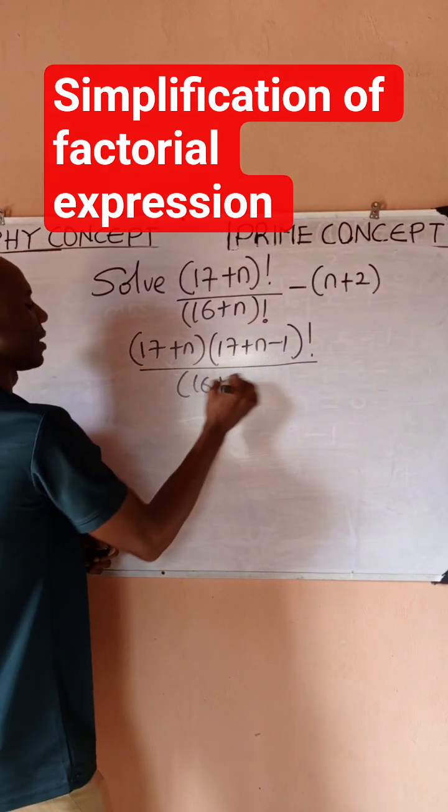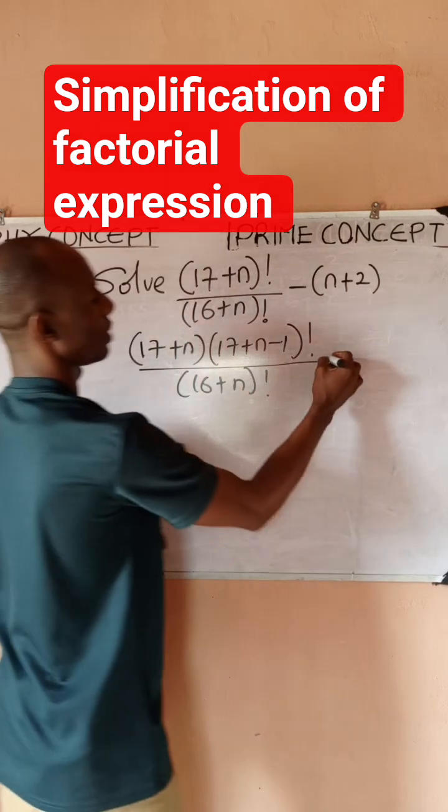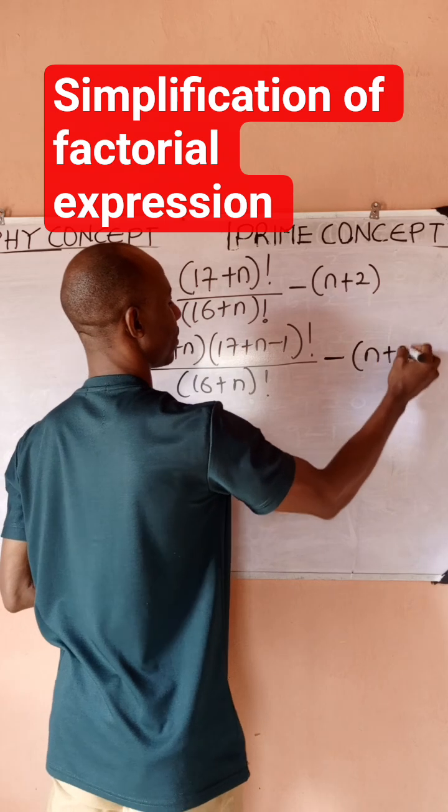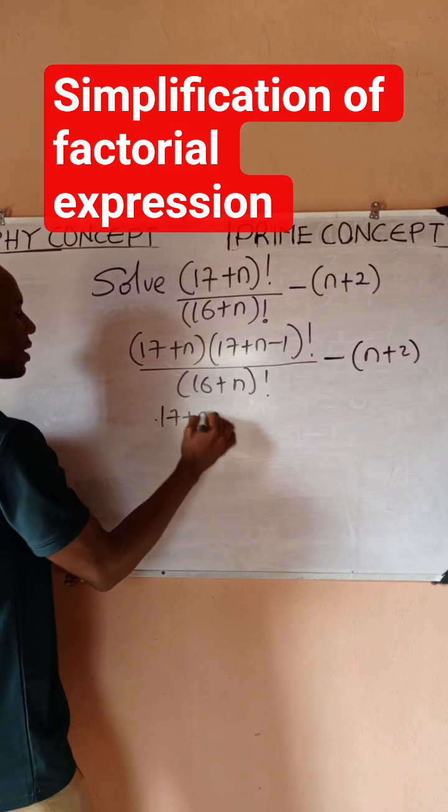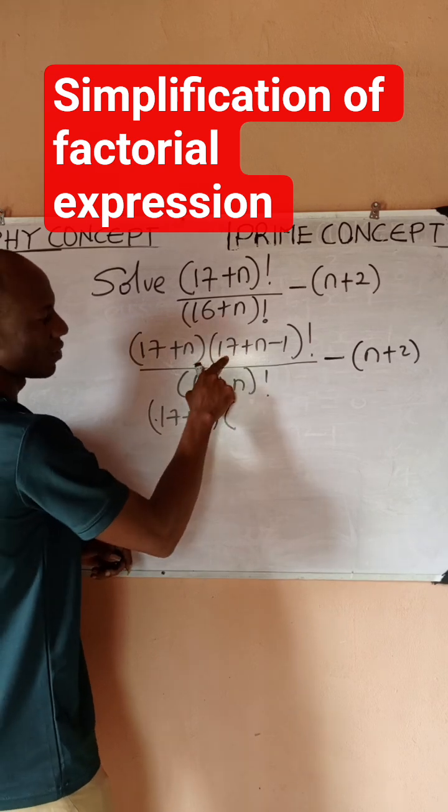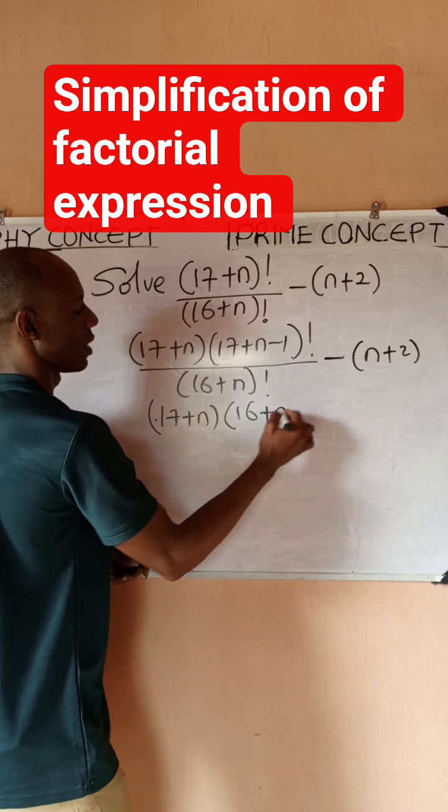I didn't touch this, I only touched the numerator, then minus (n+2). Now what do I have? I have (17+n) into... 17 minus 1 is 16, so I have (16+n)! divided by (16+n)!.